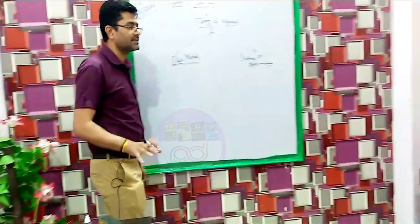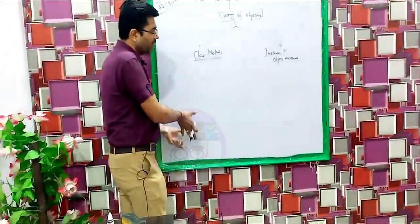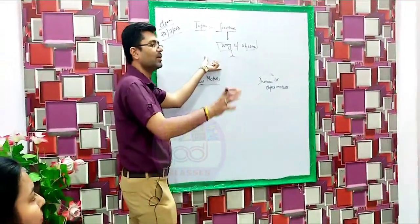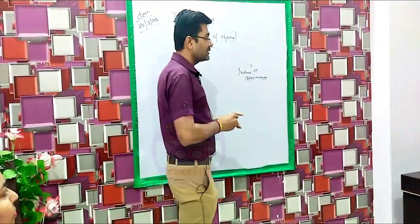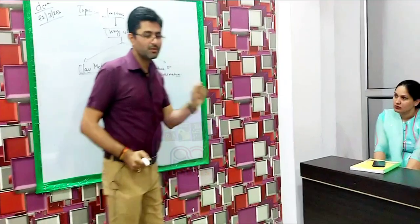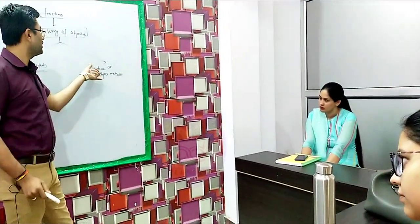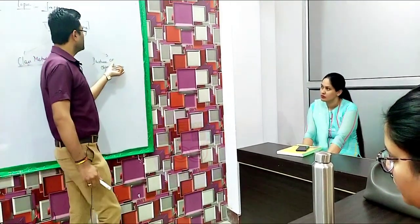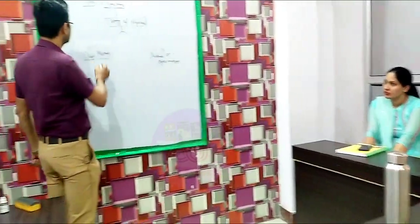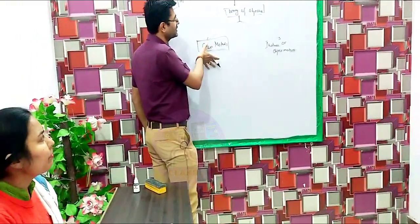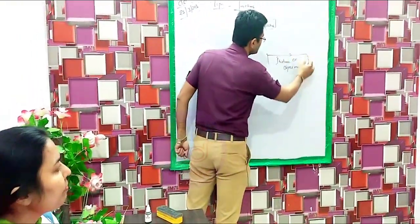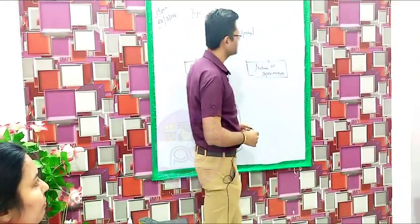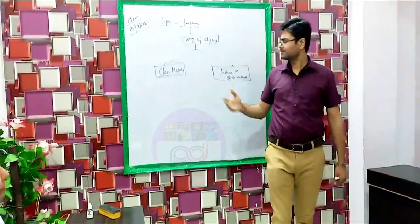For example, if I see this as a class of students, this board is a common property of the whole class. If we erase this board, this method affects all objects. But if I talk about your phone or your copy, these are separate instance properties of objects that cannot be shared among multiple objects. So class methods are methods that can be shared between multiple objects, but instance methods are methods which cannot be shared between the objects. I think you understood this topic and I will carry on further in the next class.